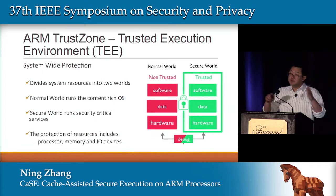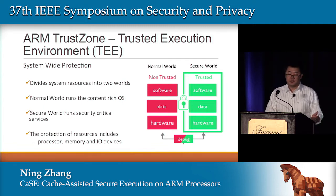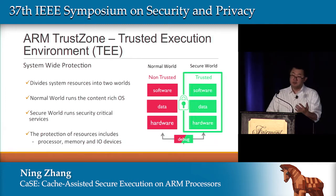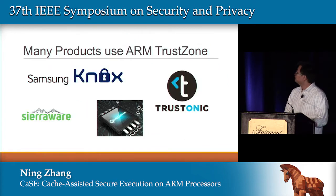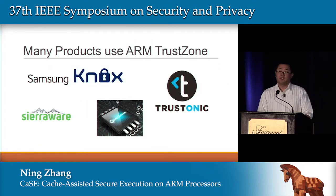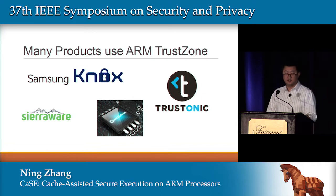What's different about TrustZone compared to some previous TEEs is that it provides system-wide protection that spans across processor, memory, and I/O devices. As we'll see later, it also modifies the cache architecture. There are many products that use ARM TrustZone services, such as Samsung Knox, Trustonic, SierraMare, and Qualcomm.